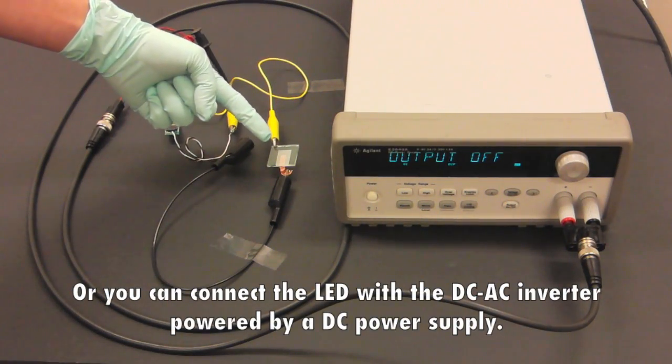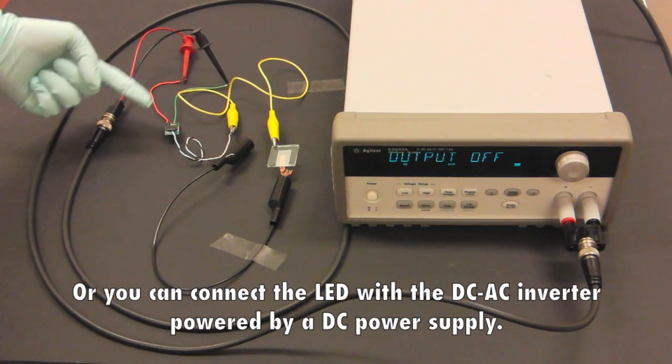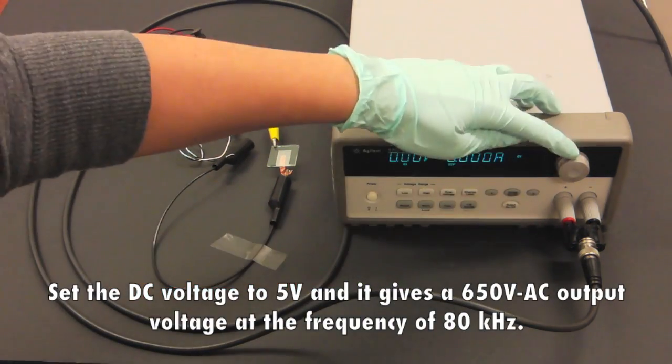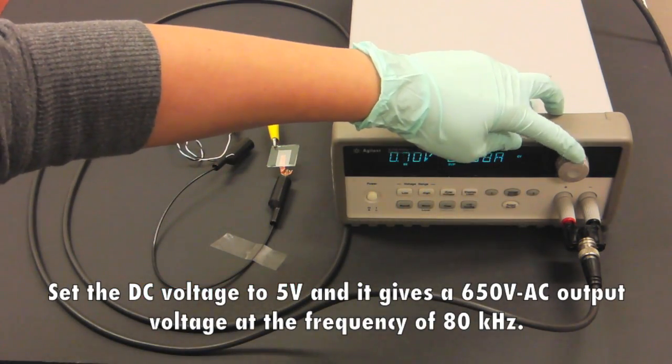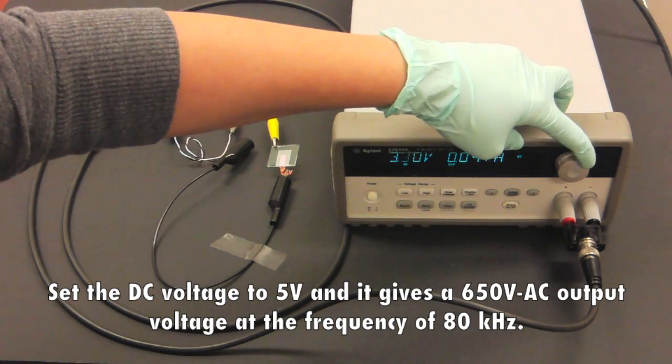Or you can connect the LED with a DC AC inverter powered by a DC power supply. Set the DC voltage to 5 volt and it gives a 650 volt AC output voltage at the frequency of 80 kilohertz.